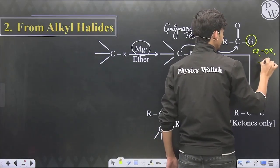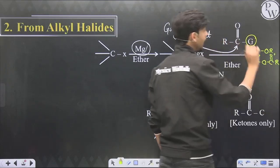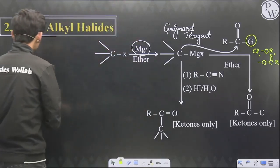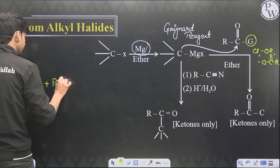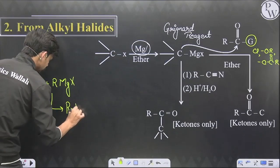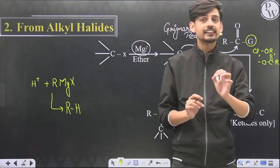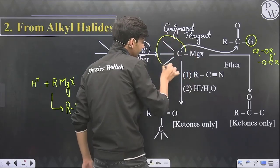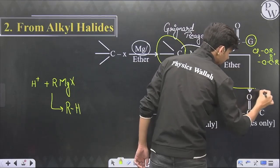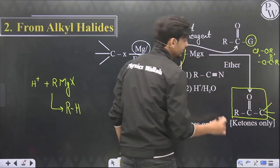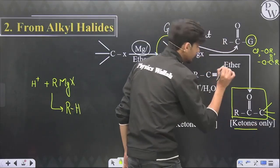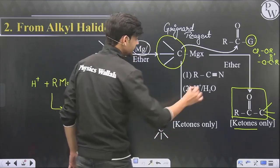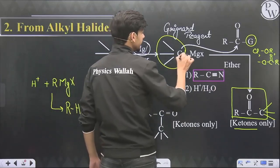Either we can react the Grignard reagent over a carboxylic acid derivative — this G can be a chlorine, ester group, acid anhydride, or acid amide — but the trick is it should not have any acidic hydrogen. If acidic hydrogen is present, Grignard only abstracts it and forms an alkane. So we cannot use carboxylic acid. The alkyl group of Grignard replaces the G group, and most of the time we get only ketone from this process.